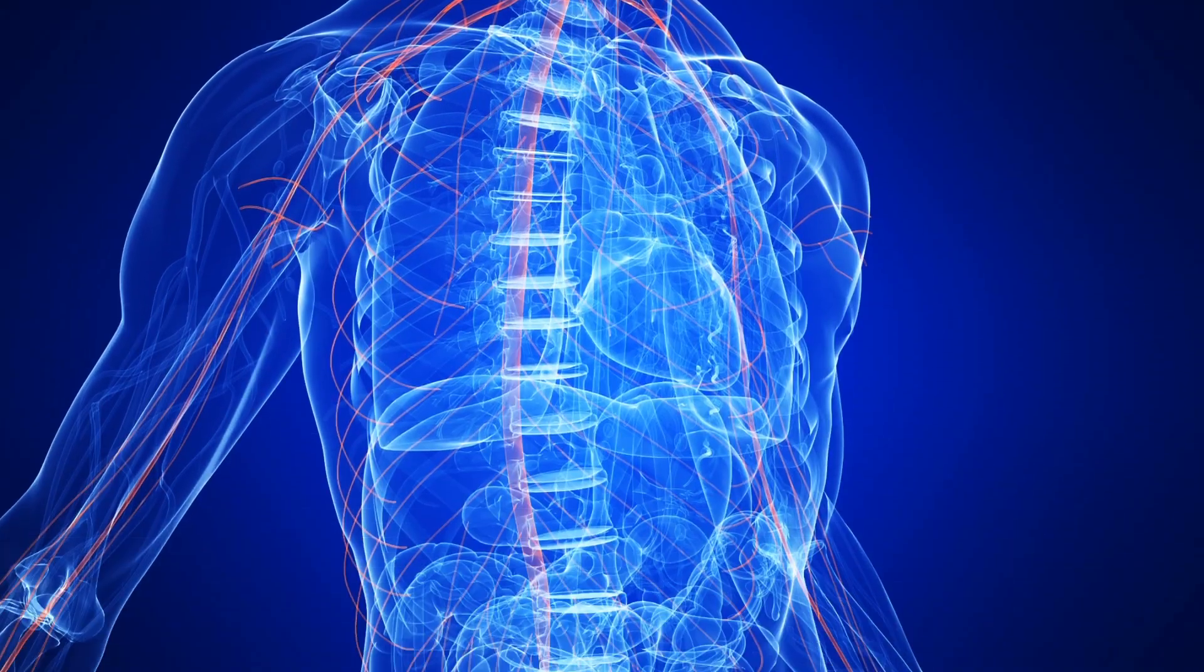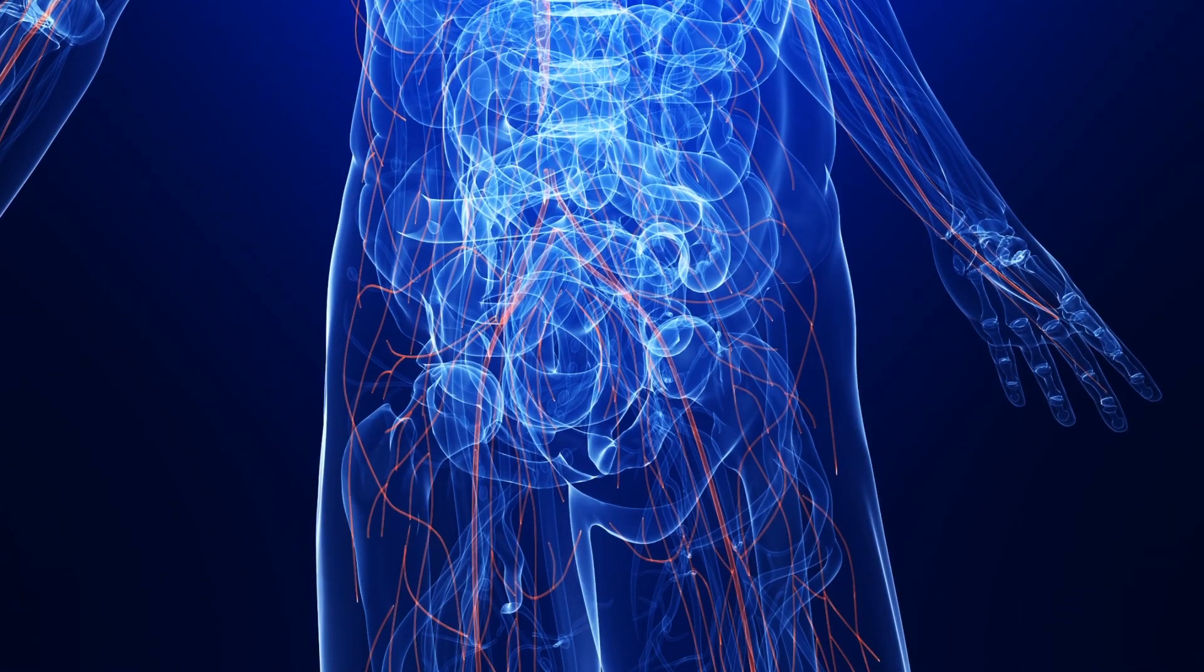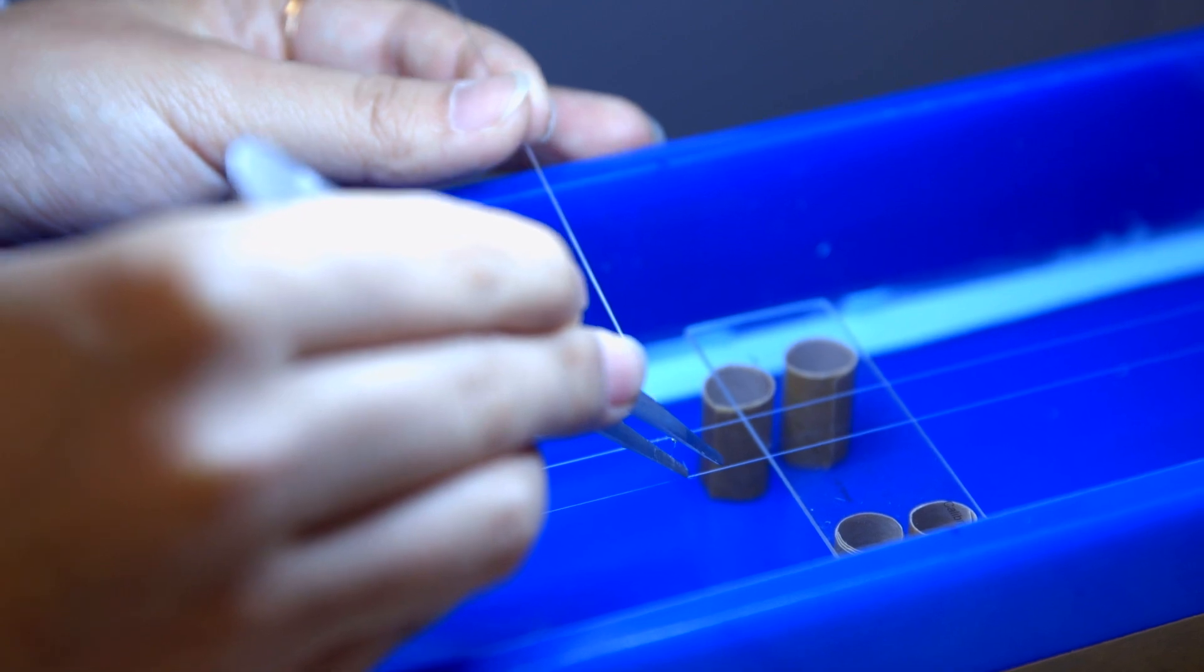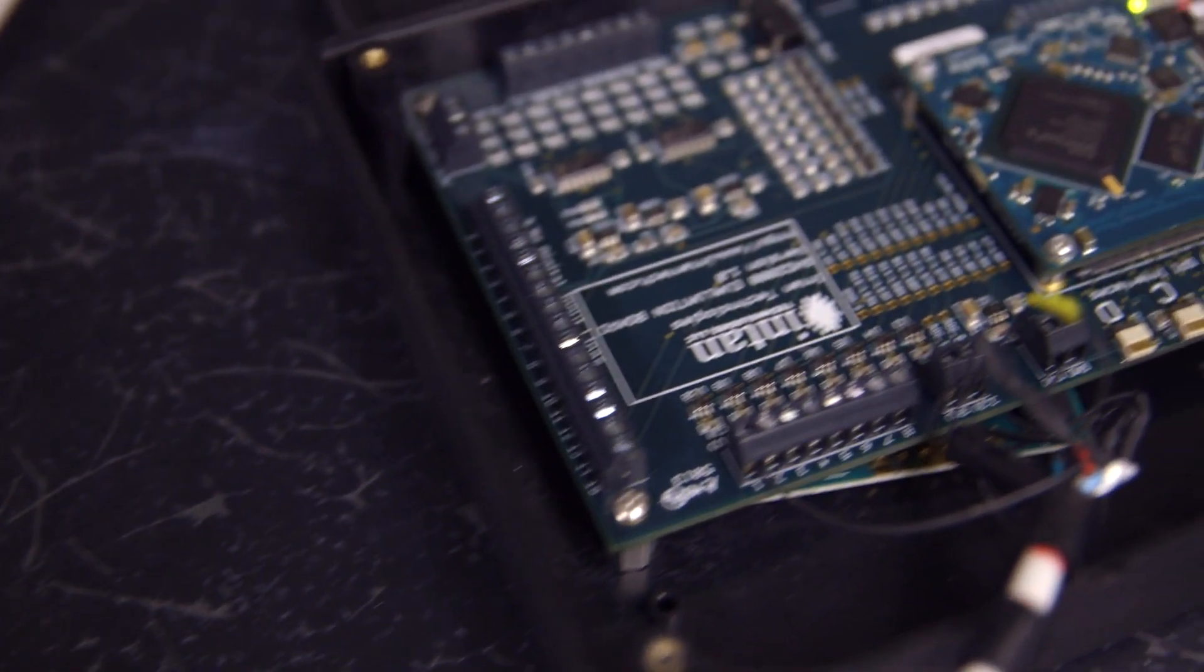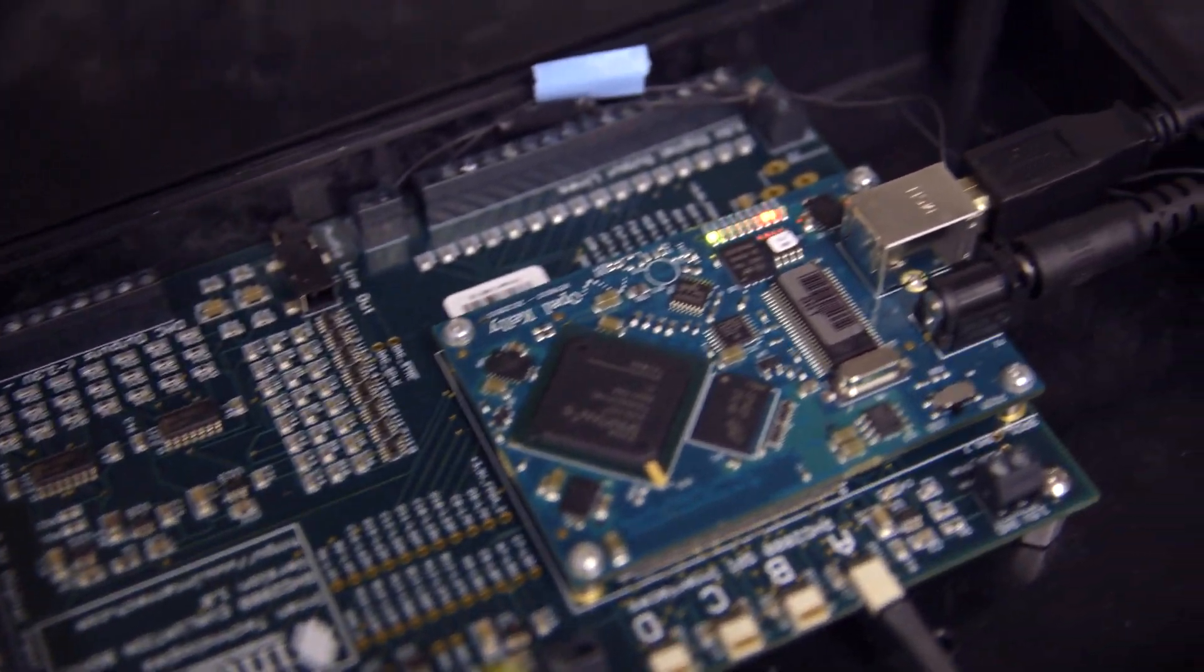This nervous system controls every organ in the body, and by placing very small wires that feel like individual axons, we are able to record from this very small nerve for very long periods of time.